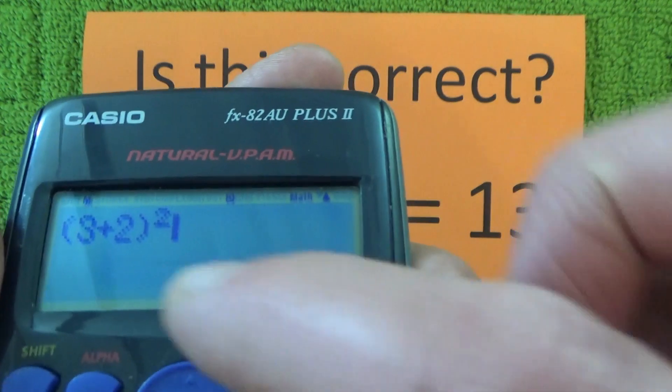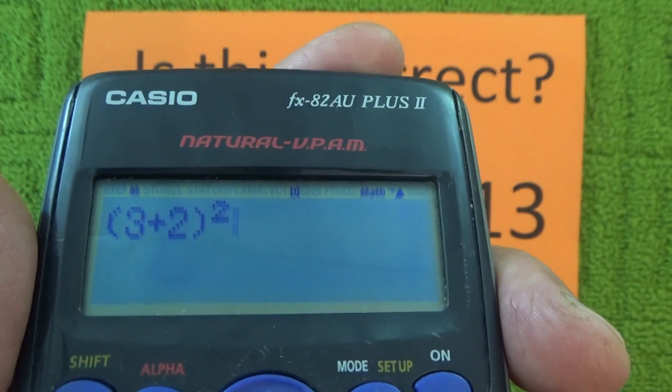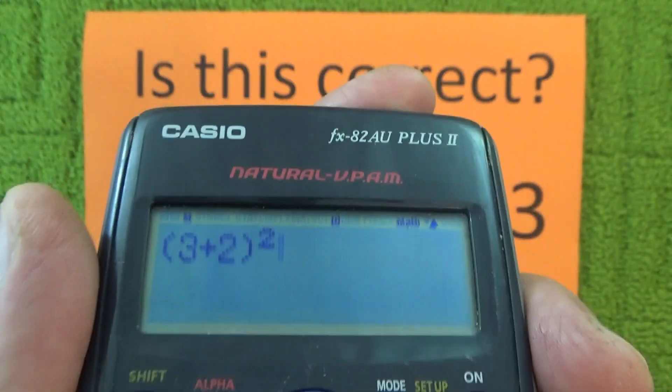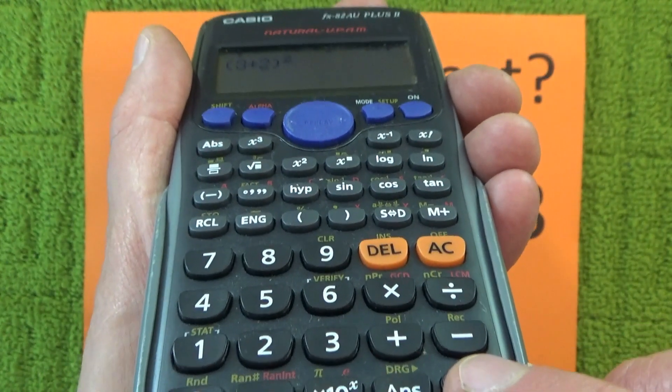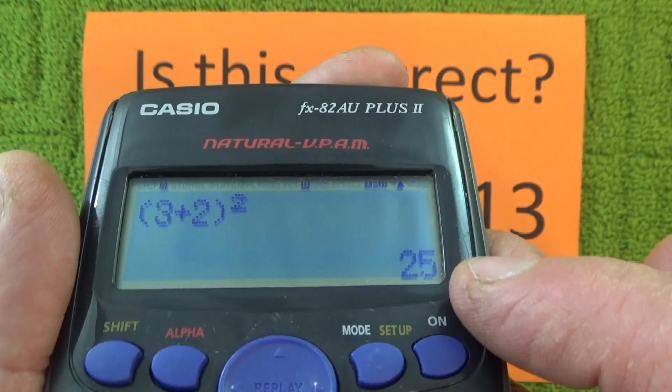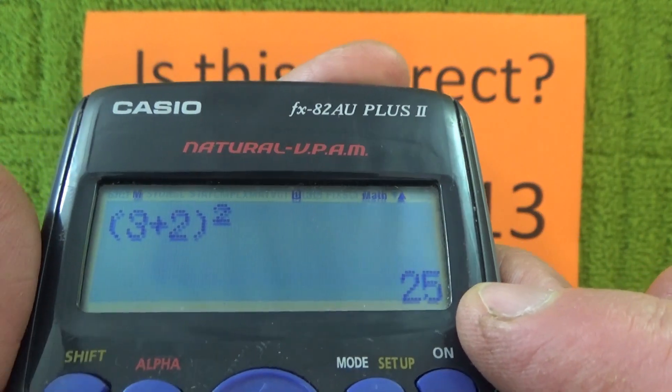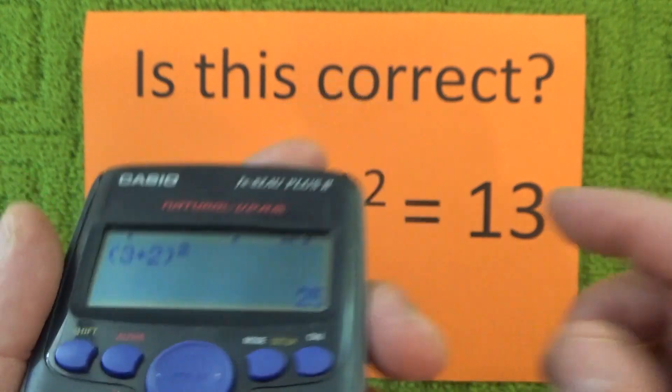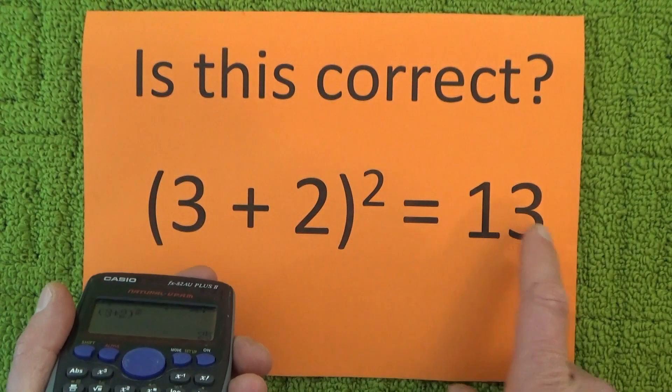So what I've done here, I've punched that equation into this scientific calculator, pressed the equals button, and the answer comes up as 25. So the answer to this equation is actually 25.